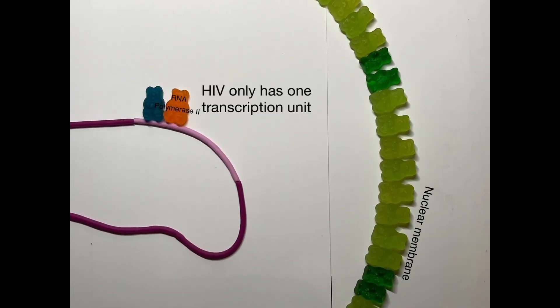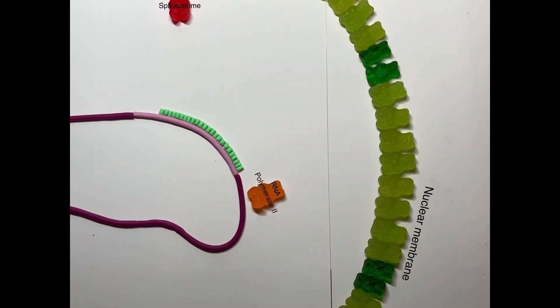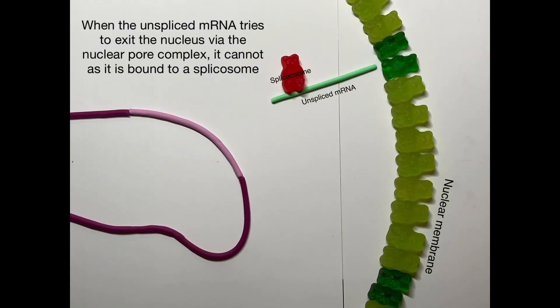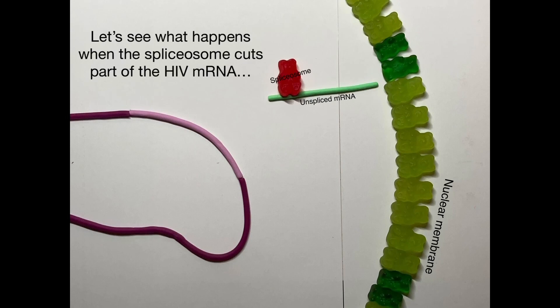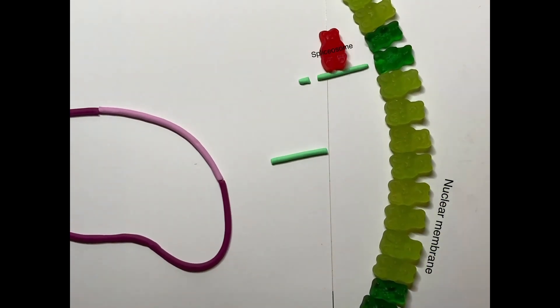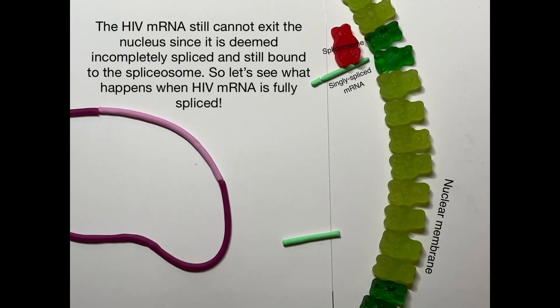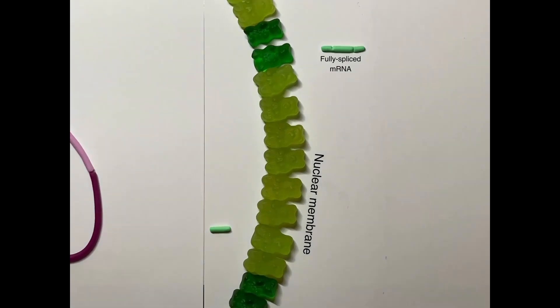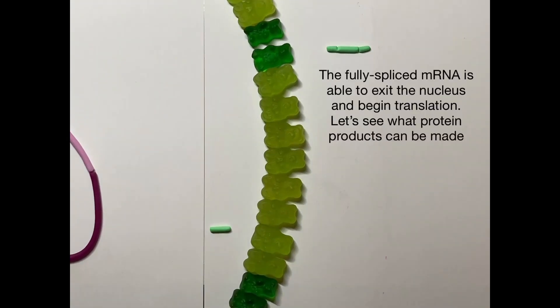HIV has only one transcription unit, so RNA polymerase produces a single unspliced version of the HIV genome. HIV mRNA can be spliced in over 30 different ways, but for simplicity these are sorted into three classes: unspliced, singly spliced, and fully spliced mRNA. Unspliced mRNA cannot exit the nucleus because it is bound to a spliceosome. Even singly spliced mRNA still cannot exit the nucleus. Only fully spliced mRNA can exit the nucleus and begin translation.